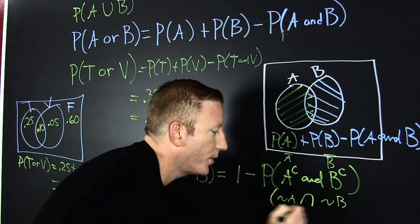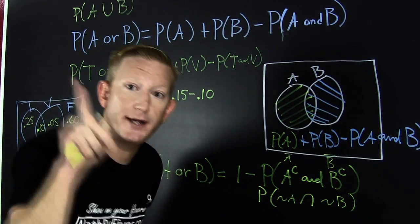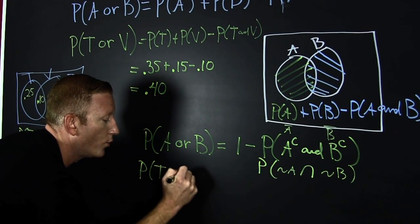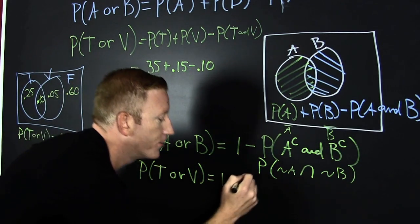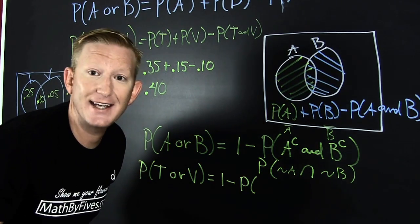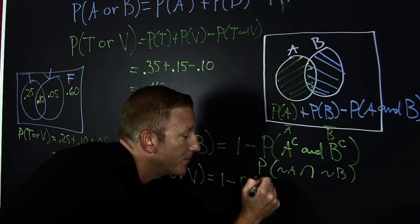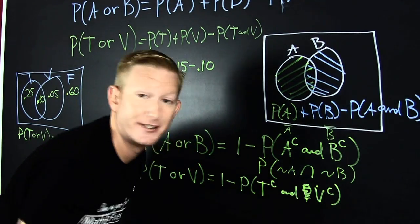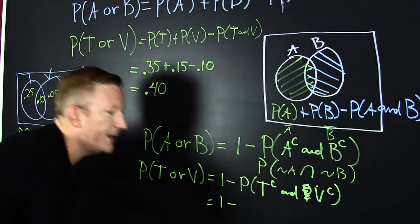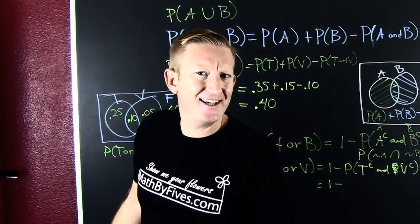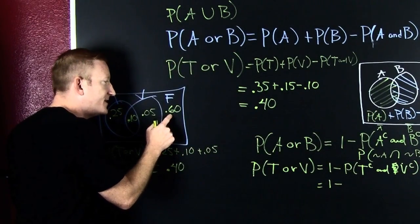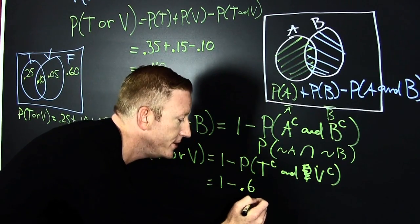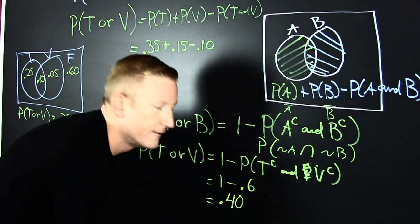The 'and' symbol in probability in the more rigorous books would look like an intersection symbol. If we're looking for the probability of ticket or vandalism, we can do one minus the probability that she hasn't been vandalized and she hasn't been ticketed — she got away scot-free. That's one minus the probability of no ticket and no vandalism. She gets away with it 60% of the time, so the probability of no ticket and no vandalism is 0.6. Again, we get 40%.